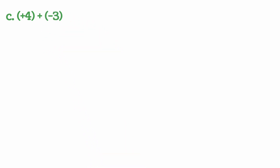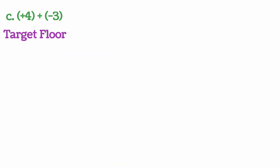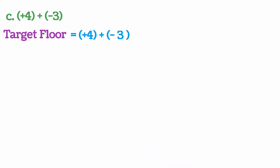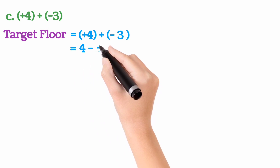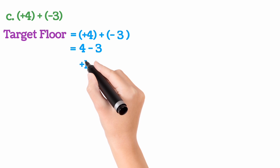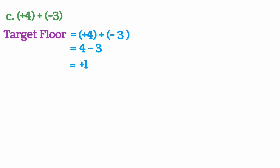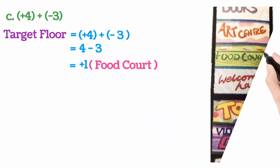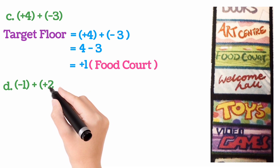Next, sum C: plus 4 plus (minus 3). Same approach — target floor equals starting floor plus movement. At present we are on the 4th floor, so write plus 4, and we press minus 3 button inside the lift. Remove the bracket: 4 plus (minus 3). One is plus, one is minus, so we do subtraction: 4 minus 3 equals plus 1. The plus sign is with the bigger number, so we reach the 1st floor — and on the 1st floor there is the food court.